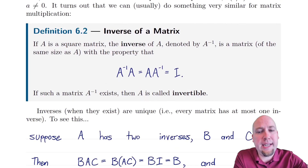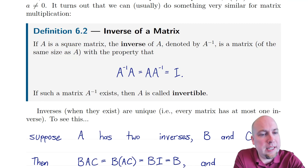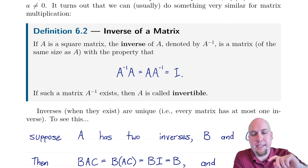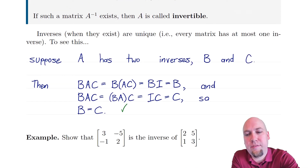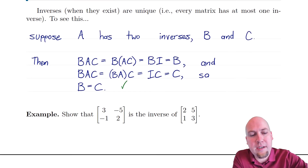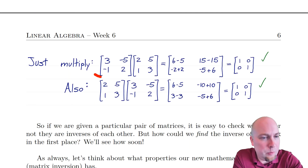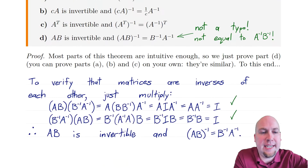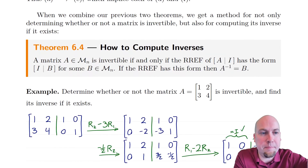To motivate our first theorem, let's go back to the definition of the inverse of a matrix. Remember, the inverse of a matrix A inverse has the property that if you multiply it by A on either side, you get the identity matrix. So we always had to be careful to check whether it was an inverse on the left and on the right — we multiplied both ways and had to verify we got the identity matrix in both orders.